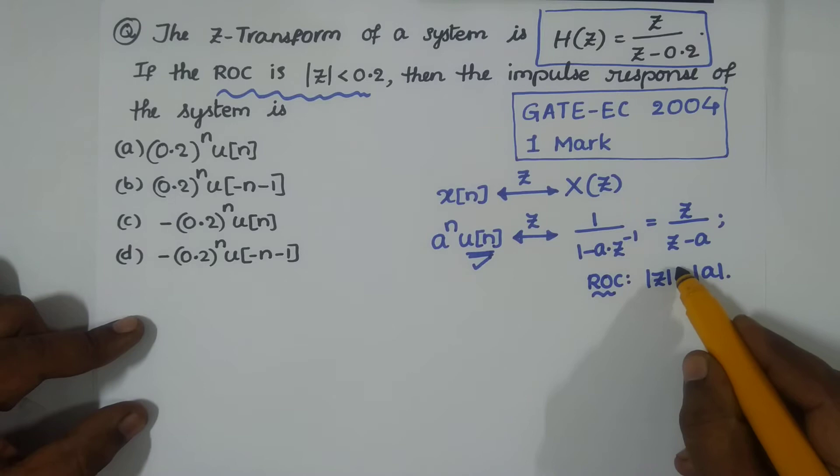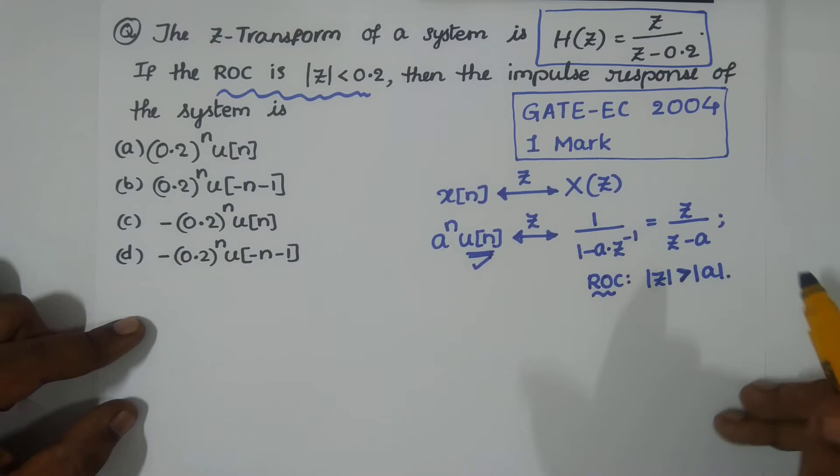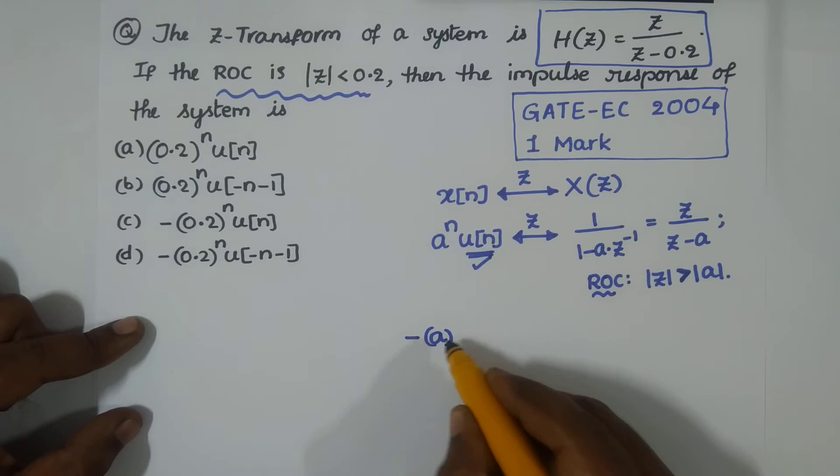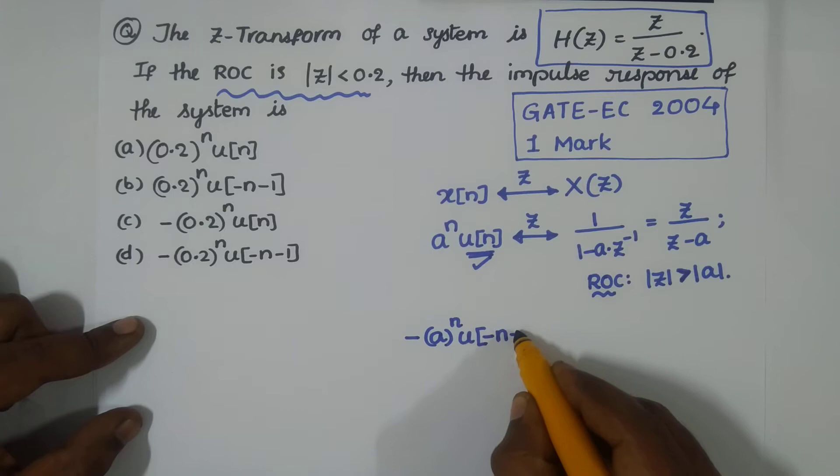Now if I take -a^n, this is a straightforward question: -a^n, see this minus is outside the bracket, u(-n-1). Now if you take its Z-transform, we again have the same closed form.